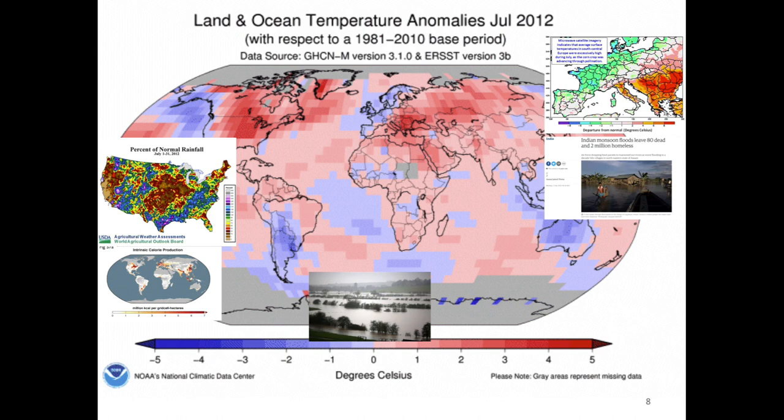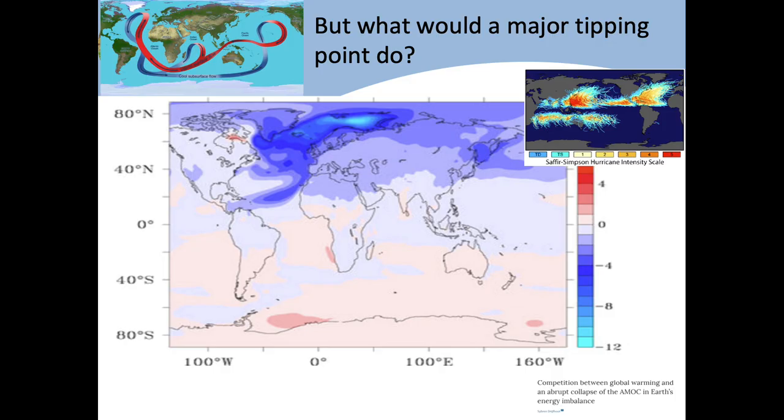The bulk of the world's calories come from a small number of breadbasket areas. Given the chance of a bad year affecting more than one breadbasket simultaneously, we have a growing and increasingly obvious risk of multiple breadbasket failure, which could impact food prices and food availability on a global basis.